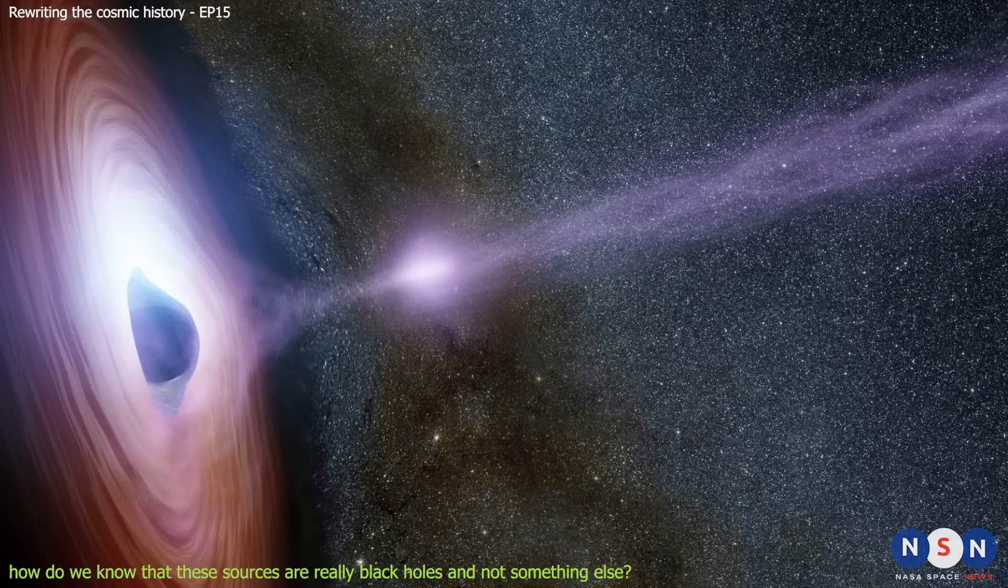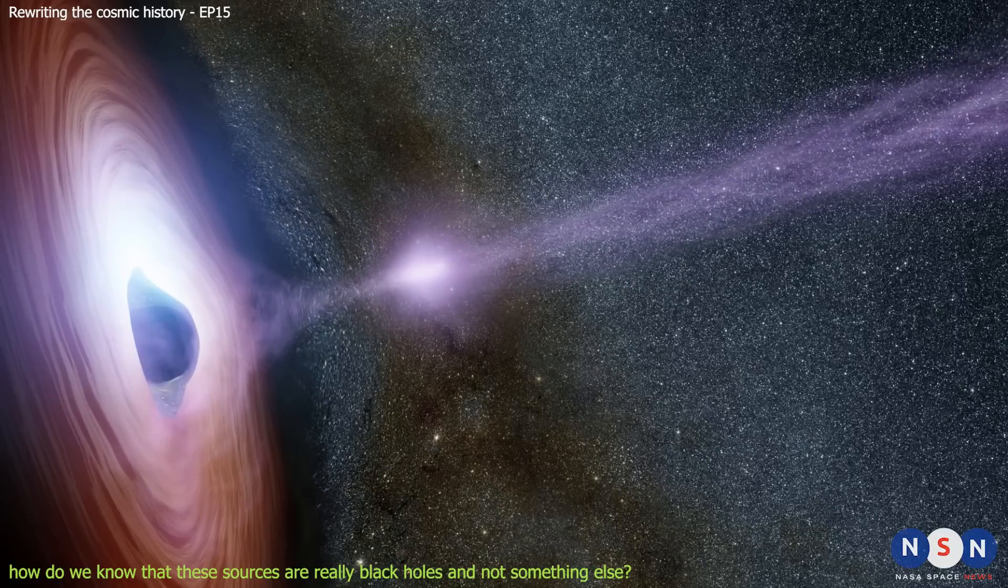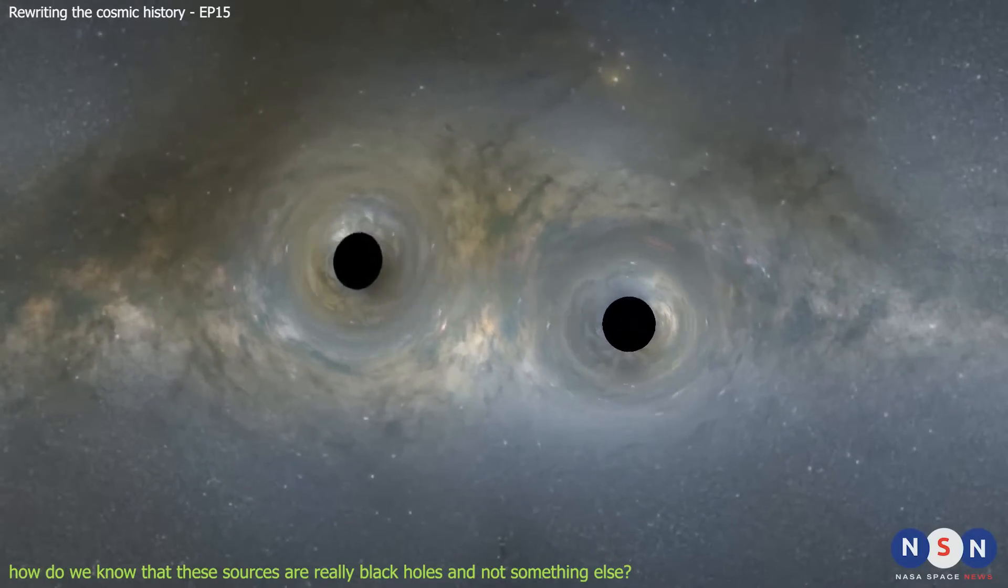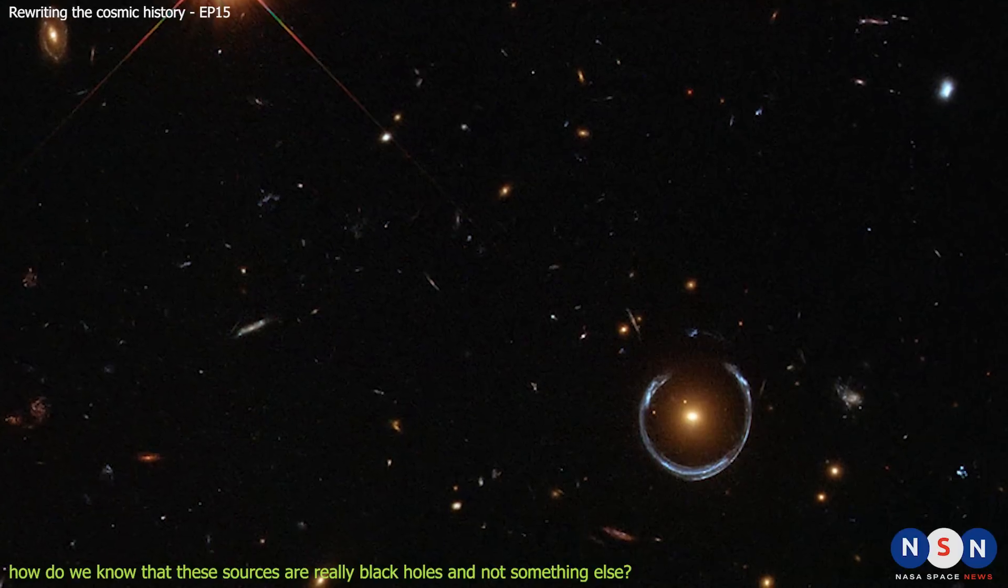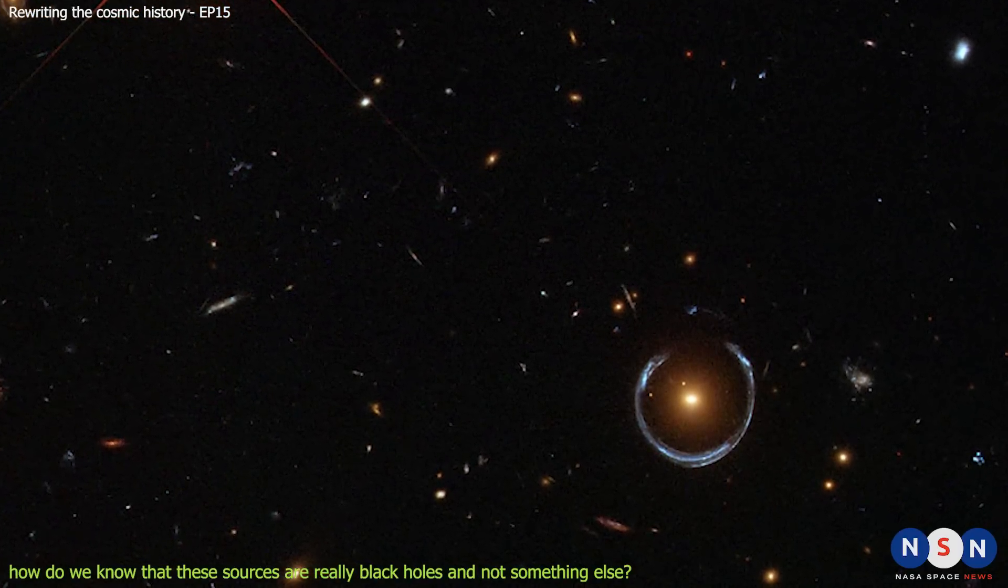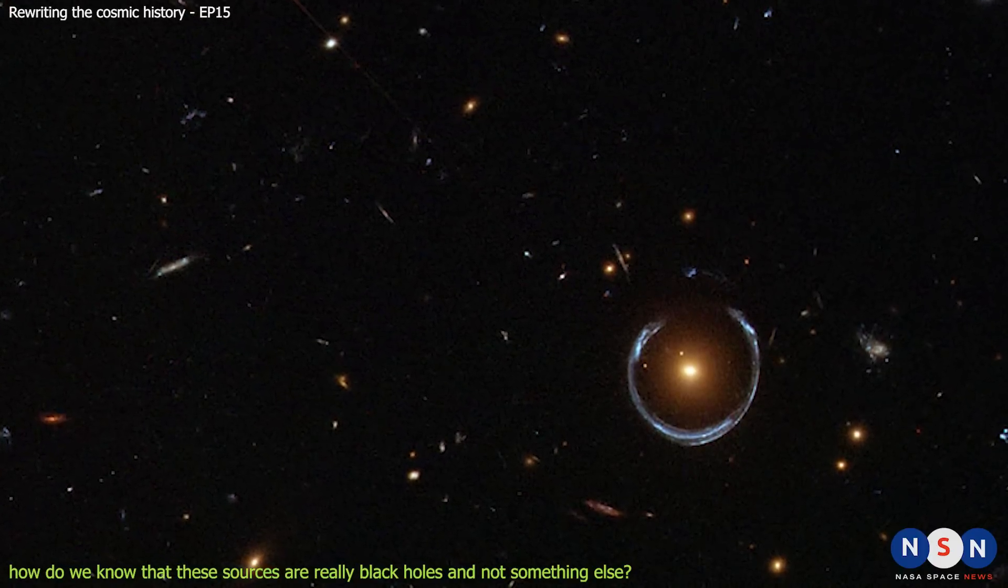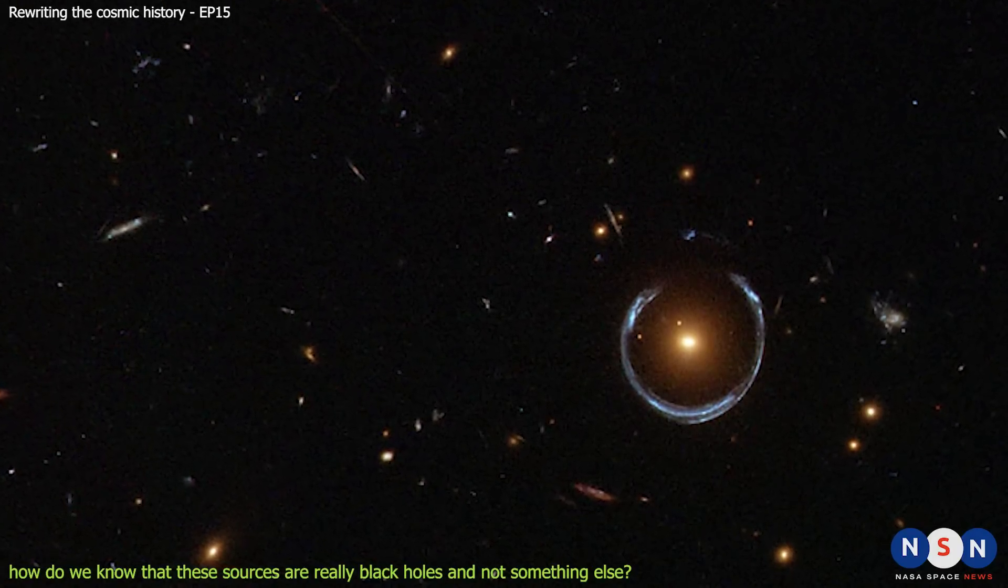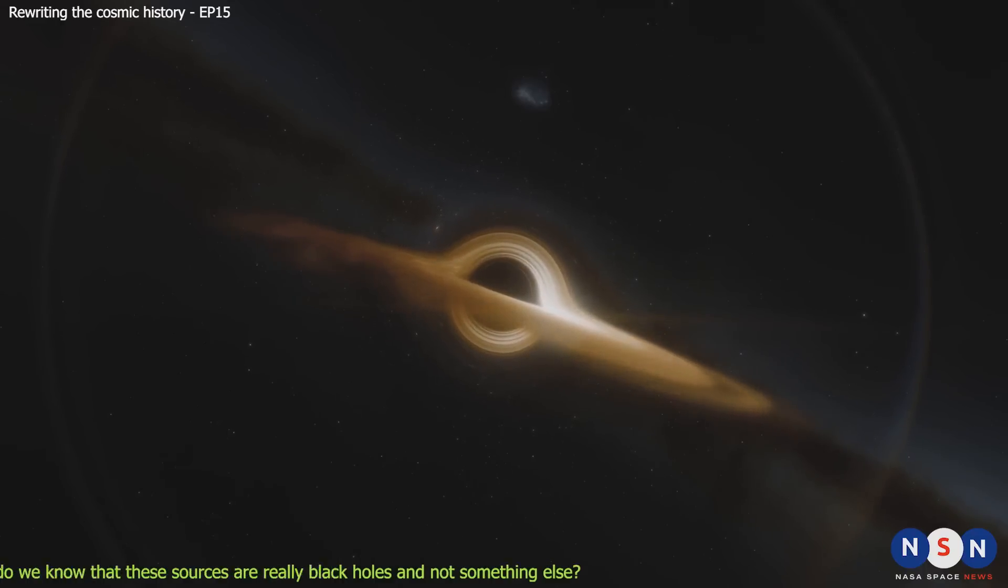Another way to do that is to look for any effects or influences that these black holes have on their surroundings or on other sources nearby. For example, we can look for any gravitational lensing effects caused by their strong gravity bending the light from background sources. We can also look for any feedback effects caused by their powerful radiation or jets heating or blowing away the gas and dust around them. These effects could have important consequences for the formation and evolution of stars and galaxies in their vicinity. By using these methods and others, we can confirm that these sources are indeed black holes and not something else.